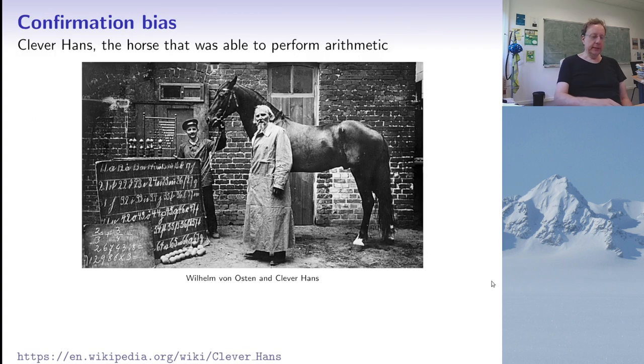These problems of misusing statistics are connected to something called confirmation bias. In this regard, here's a story I like to tell, which is a true story. It's the story of Clever Hans, the horse that was able to perform arithmetic.